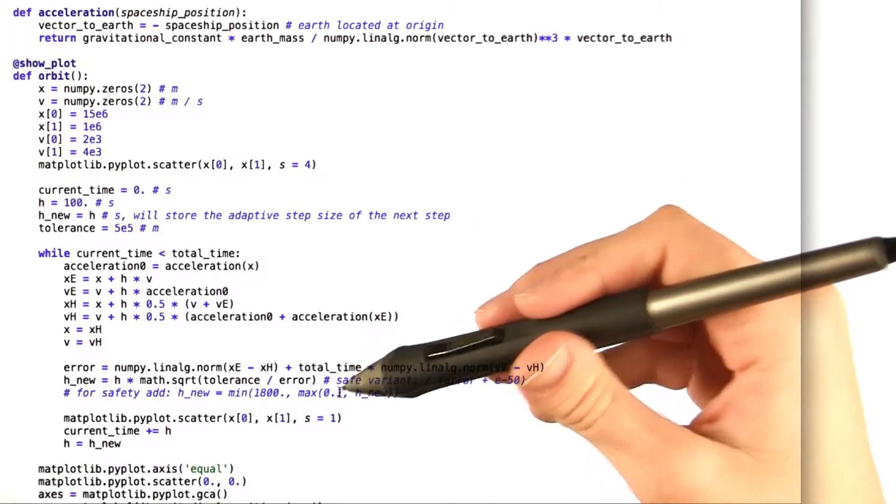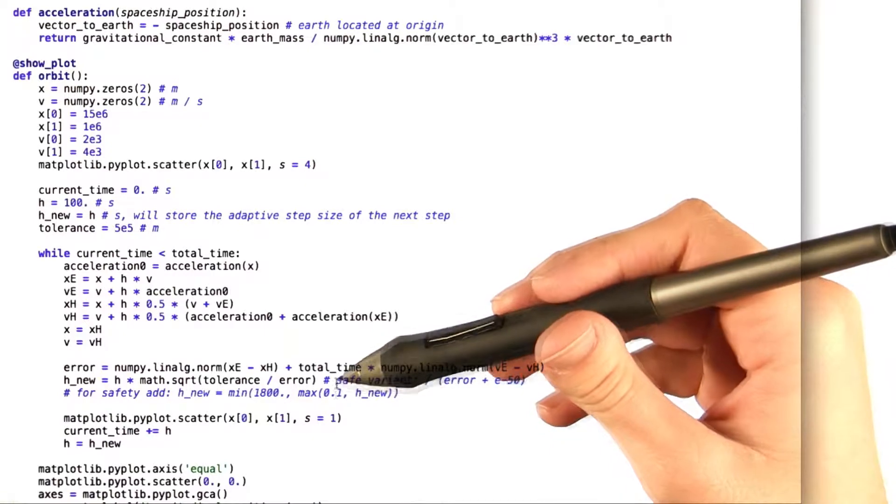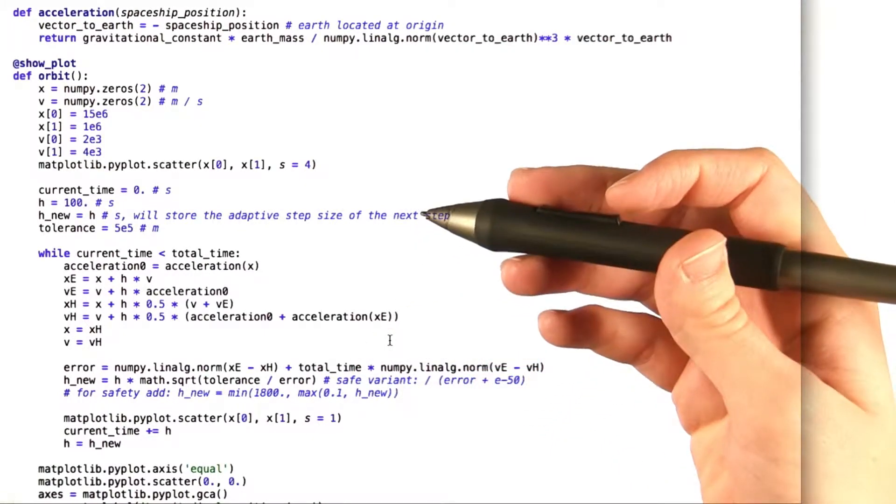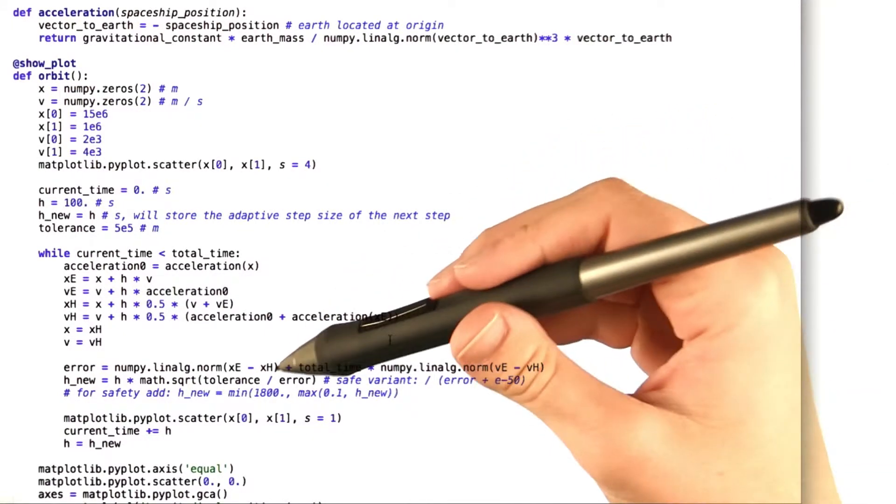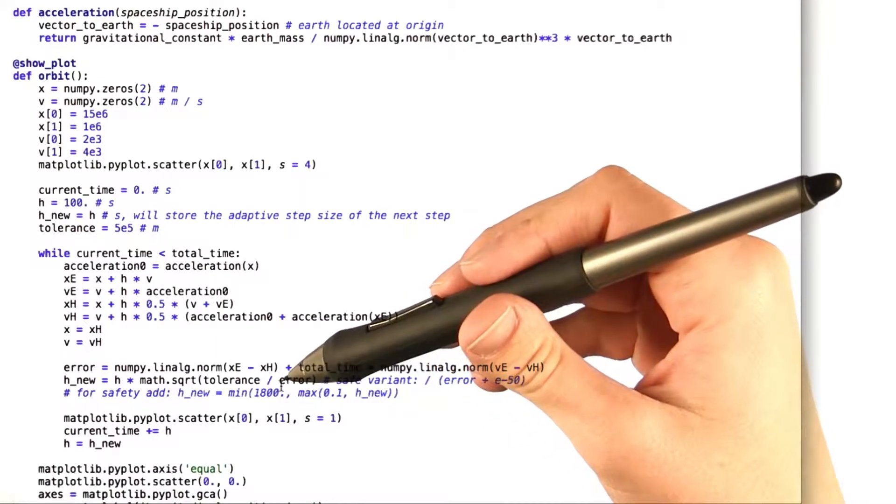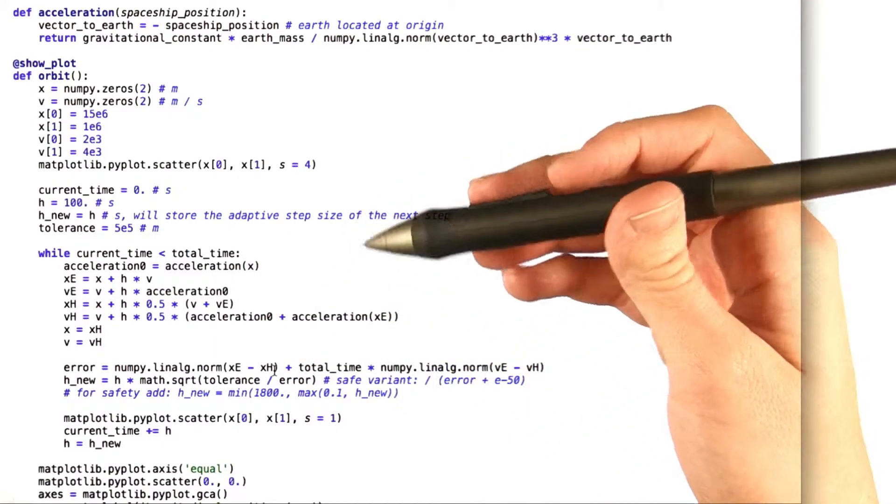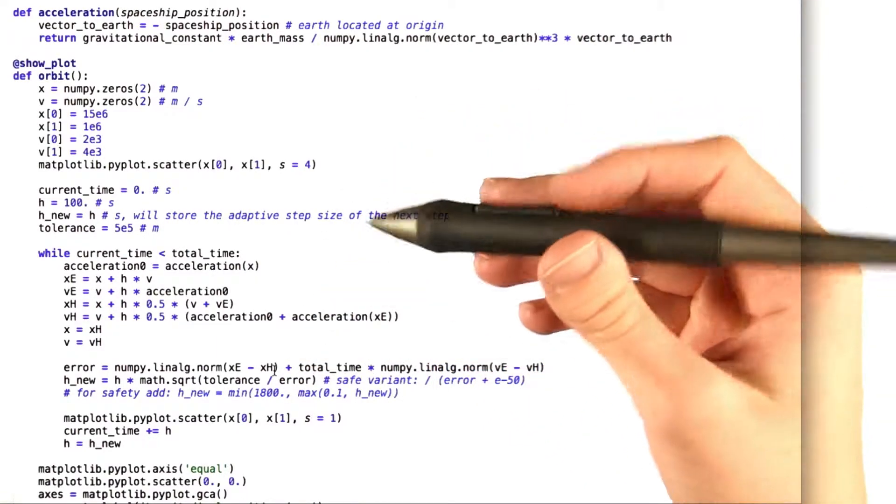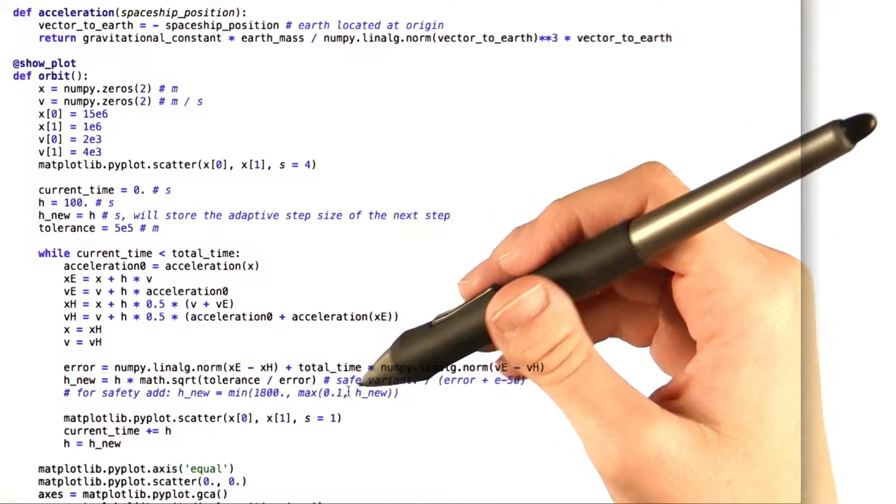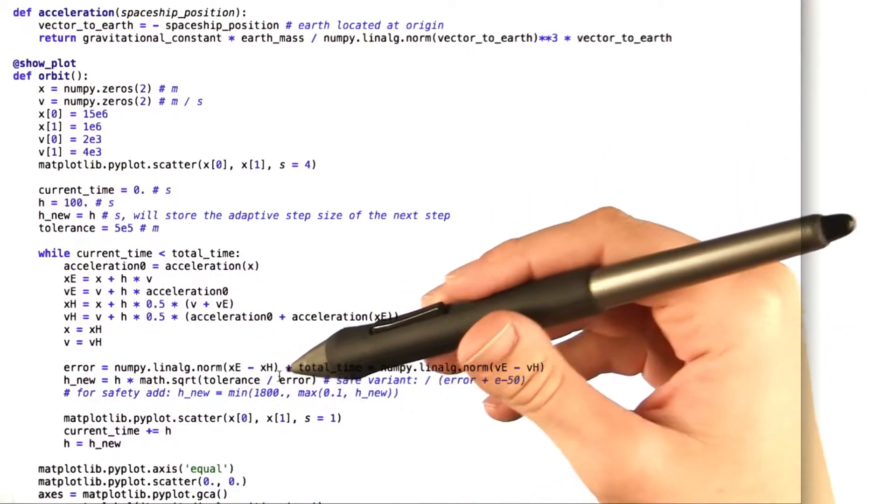If h is smaller than 0.1, then the maximum becomes 0.1, and eventually you'll end up with a value of 0.1. Now, if time gets larger than 1800, then the minimum becomes 1800 and the new step size becomes 1800. So this limits the range of h_nu to be between 0.1 and 1800.